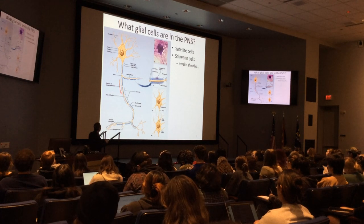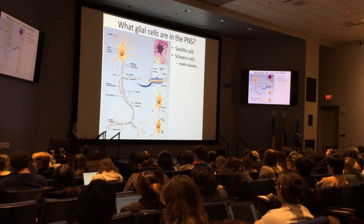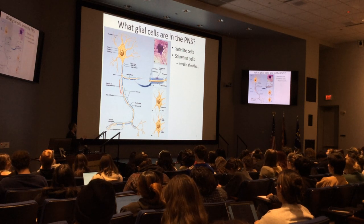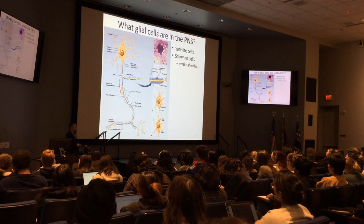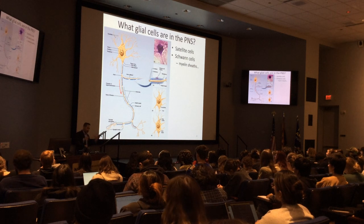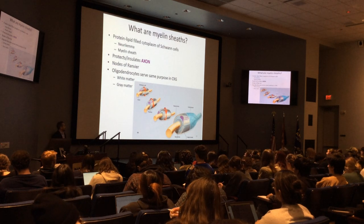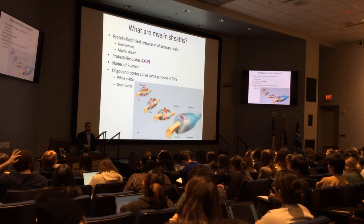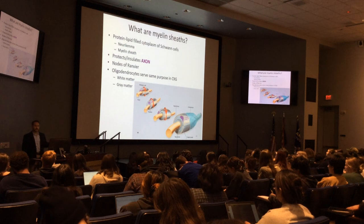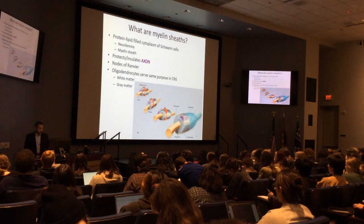The node of Ranvier is the bare axon. The action potential moves inside and underneath intracellularly, exchanging ions at those nodes. The oligodendrocytes do this same thing in the central nervous system. In the CNS, myelinated nerves are the white matter; unmyelinated neurons in the brain are gray matter.